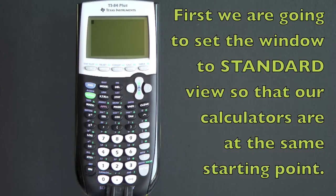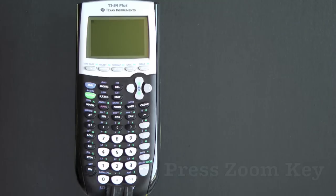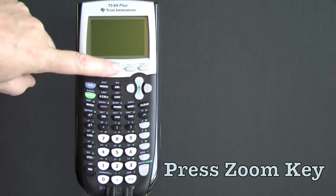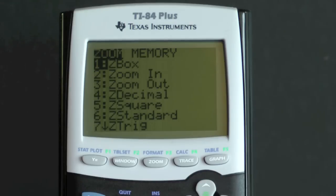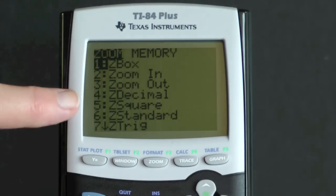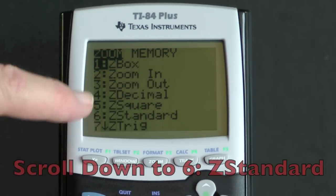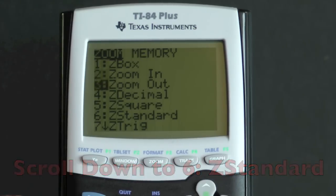First we're going to set the window back to standard view so that we're all starting in the same place. Press the zoom button and look at the options. Option 6 says Z standard. Scroll down to 6 and press the enter button.